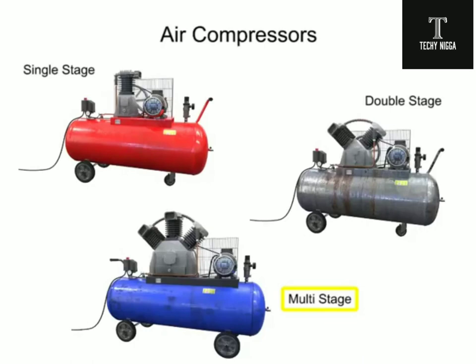To reach a pressure of 2,500 psi, as many as 6 or 7 stages may be needed with cooling between each stage. Their versatility makes compressors one of the primary components in air production.